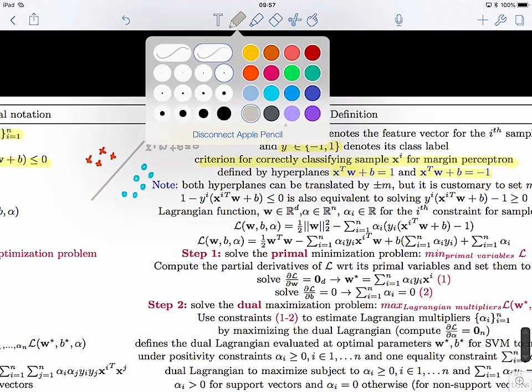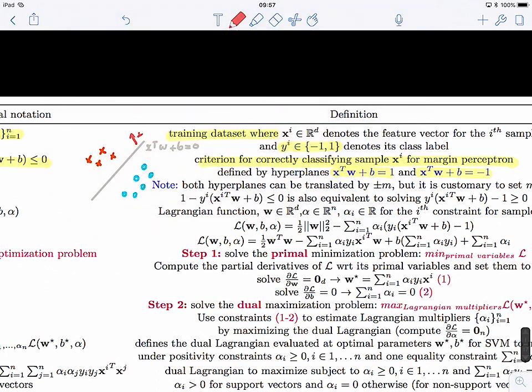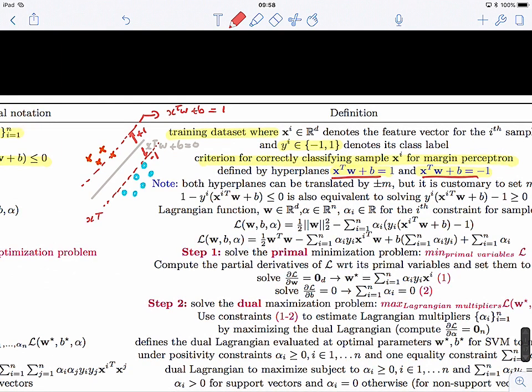But when we define the margin perceptron, we introduced a margin. If you remember, we translated each hyperplane by plus one and minus one. So this is the first hyperplane, x transpose W plus B equals one, and x transpose W plus B equals minus one. After figuring out all the math for support vector machines, we found that the margin is equal to one divided by the norm of W.